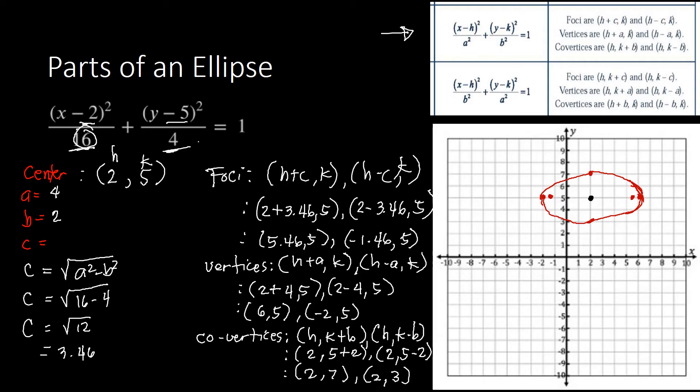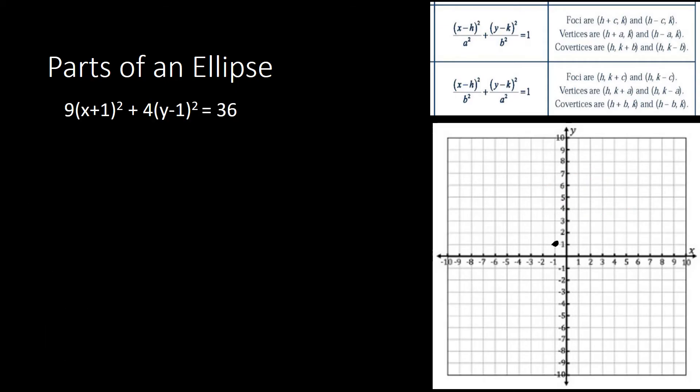That is how you find the parts of an ellipse and draw its graph. Now we have the next problem: 9 times (x plus 1) squared plus 4 times (y minus 1) squared equals 36.